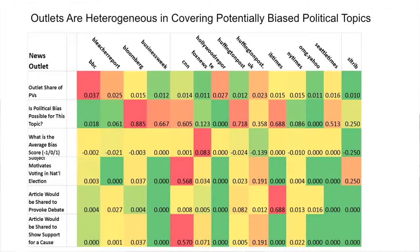Outlets are also very heterogeneous in terms of covering various potentially biased topics. Surprisingly, Bloomberg and Business Week have pretty high scores for potential political bias because they're covering various political topics like government programs. And another thing — subject motivates voting in the national election: CNN apparently covered a lot of those topics in our sample. We also have measures like whether the article would have been shared to provoke debate or shared to support a cause. We see a lot of heterogeneity there as well.